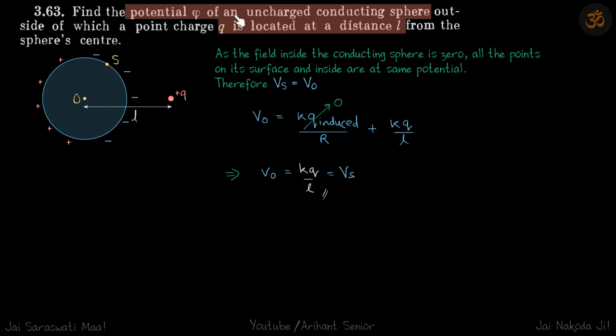We need to find the potential of an uncharged conducting sphere where we have put a plus Q charge at a distance L from the center. So what is the potential of this sphere? Let's say the center is O and on the surface we have a point S. We need to find the potential at S.